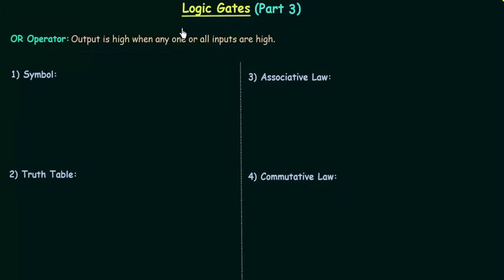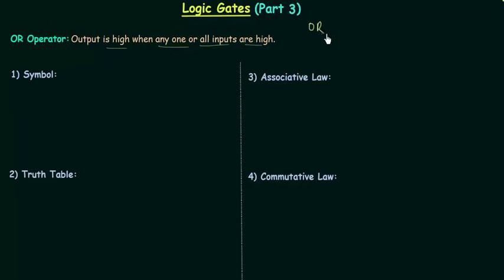Welcome to this part of logic gates. In this part we will discuss OR gate. First we will see what is OR operator. In OR operator, output is high when any one or all inputs are high. So if you want to make output high in OR operation, you have to make any one of your inputs high. We implement OR operation by using OR gate. In this lecture we will see different properties of OR gate.